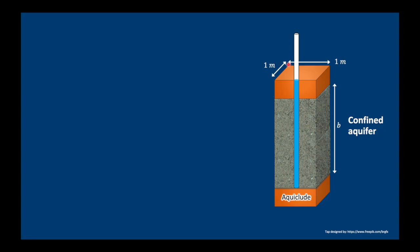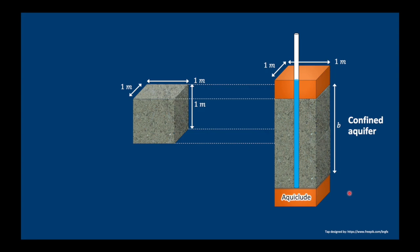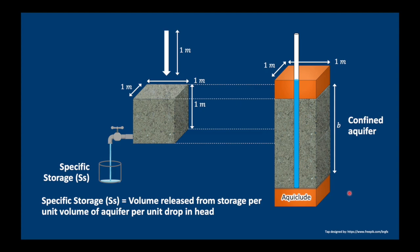Let's have a closer look at our confined aquifer. Let's assume we have a 1 by 1 meter section of aquifer with a thickness b. And we take out a cubic meter of this aquifer and we depressurize it by 1 meter. Then the amount of water which will be released from this 1 cubic meter is called the specific storage. The specific storage is the volume released from storage per unit volume of aquifer per unit drop in head. So we have volume in cubic meters, the volume of the aquifer also in cubic meters, and the drop in head in meters. So cubic meters divided by cubic meters divided by meters and we end up with this funny unit, meter to the minus 1.